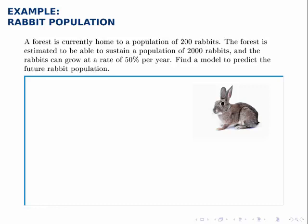In this example, we're told that a forest is currently home to a population of 200 rabbits. That forest is estimated to be able to sustain a population of 2,000 rabbits, so that's the carrying capacity, and the rabbits can grow at a rate of 50% per year.